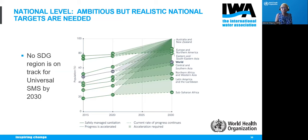When thinking about what targets to set for sanitation, the key message is that targets need to be realistic but also ambitious. The figures show progress towards safely managed sanitation by 2030 by region. No region is actually on track for achieving safely managed sanitation for all — to achieve this at current rates, progress would need to quadruple. That is a huge challenge for many countries around the world.